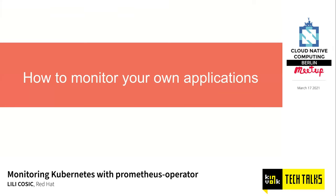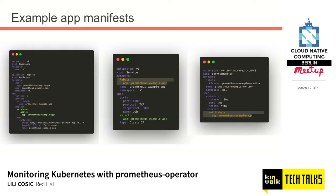Now that we've seen how Kubernetes own workloads are monitored, let's see how you monitor your own applications. It's quite simple — we have our ServiceMonitor on the right side with matching labels, which selects our service in the middle. The service has a selector that matches all the pods deployed by the example deployment. We expose the metrics port in the service, and everything else is taken care of by Prometheus Operator. Your application only needs to expose the /metrics endpoint, and it gets picked up by Prometheus.